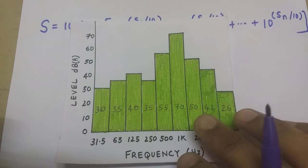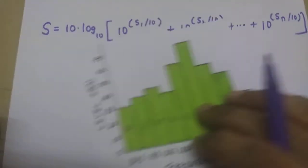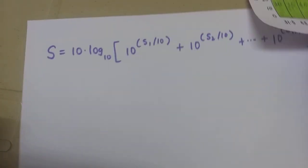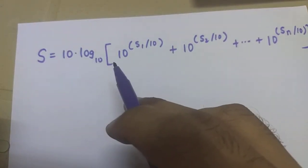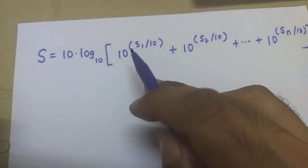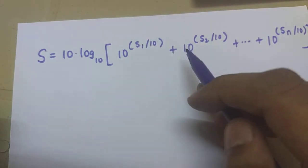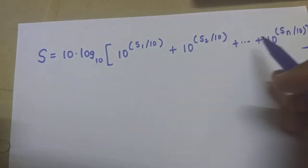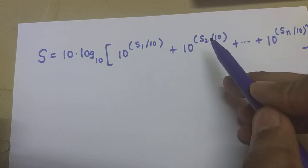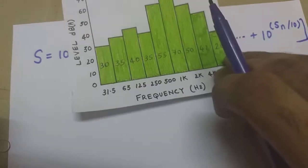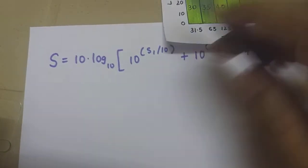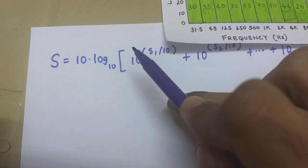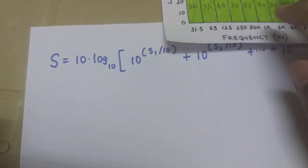So we calculate the overall level by using an equation which is the logarithmic addition. So the logarithmic addition, as explained in the previous videos, follows this equation which is 10 log to the base 10, 10 power s1 by 10 plus s2 by 10 and so on. So s1, s2 are the different sound pressure levels. So in this case, these are going to be s1, s2, s3 and so on. And s is the total sound pressure level, which is the logarithmic average.